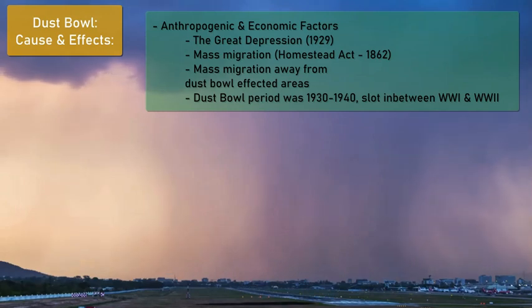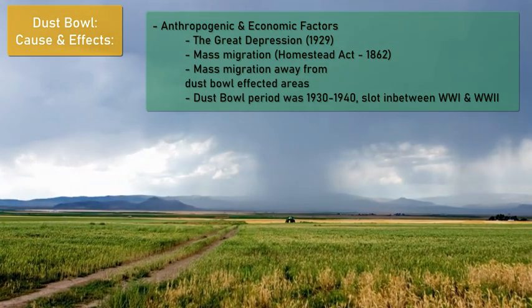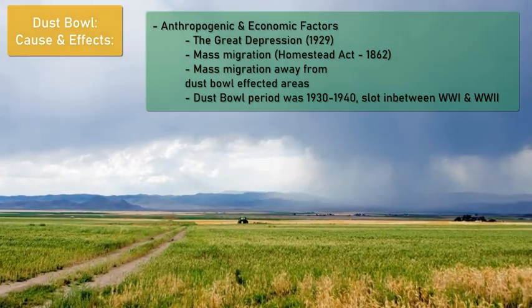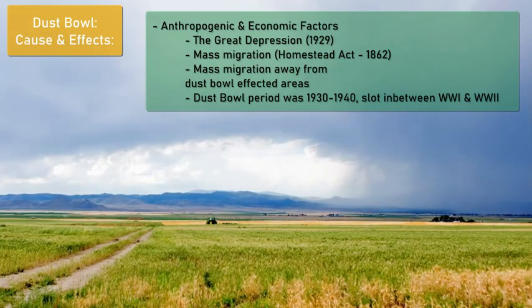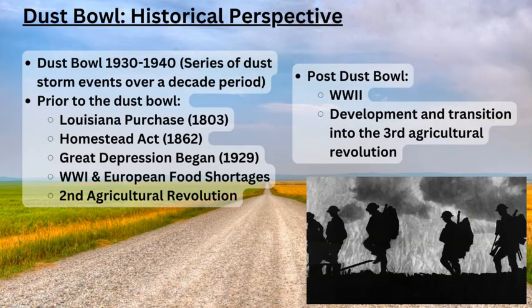Prior to 1930, the climate was different and farmers had fewer issues growing crops in the Great Plains due to higher amounts of precipitation. World War One was also going on in Europe prior to 1930, which caused European agriculture and farming to decrease severely, leading America to make up the difference and send more food to Europe during and after the war.